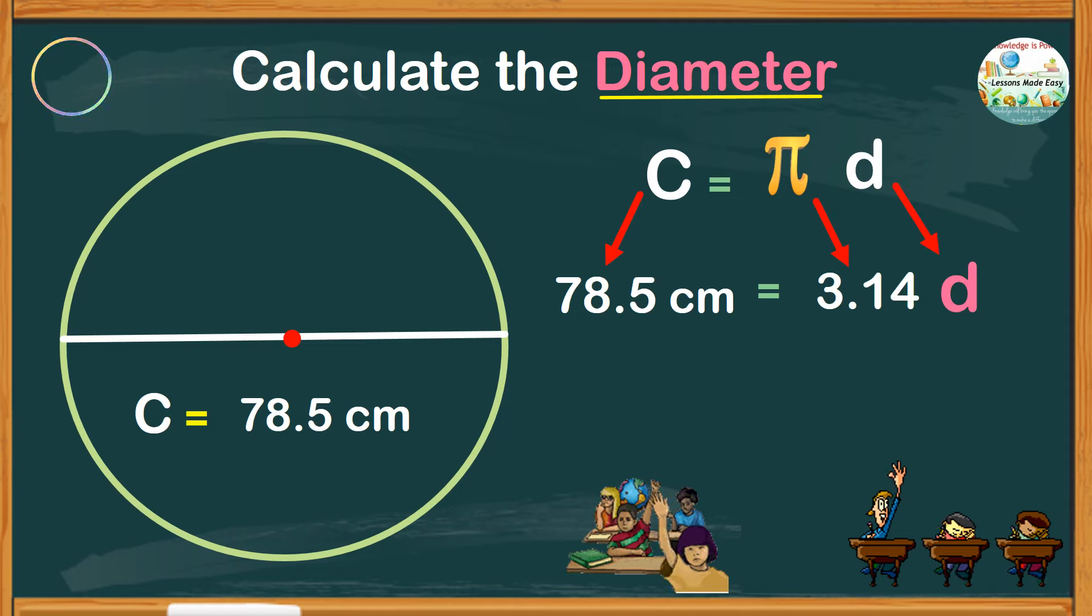So to find the diameter, we may transpose or move pi to the other side of the equation if you prefer to do so. But I guess it is much easier to understand if we keep the equation as it is, and do the simple steps.